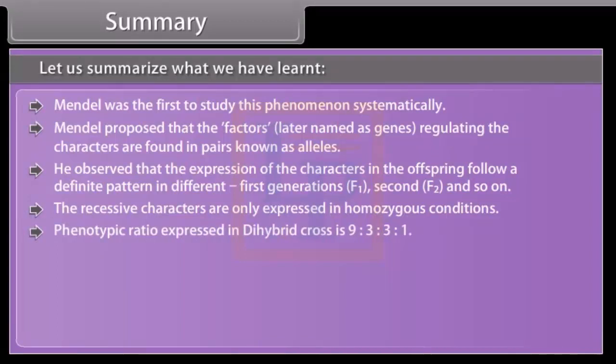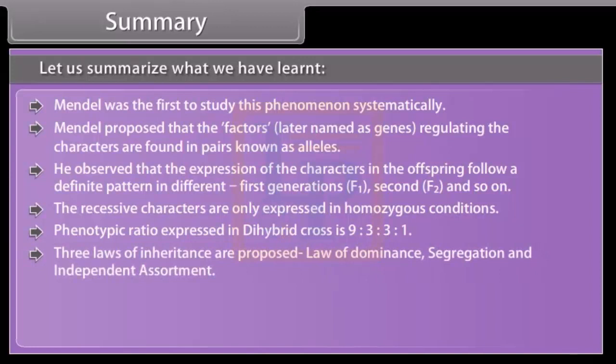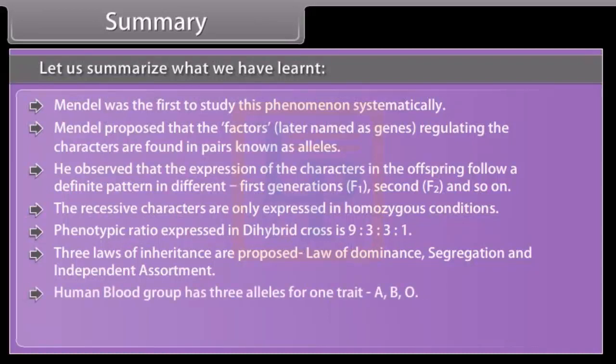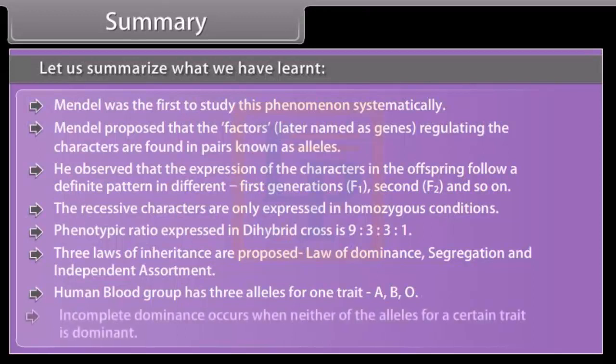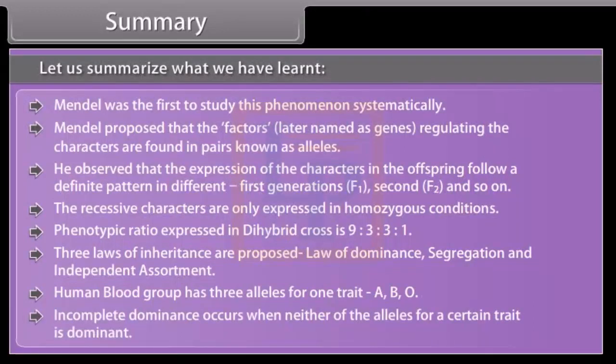Phenotypic ratio expressed in dihybrid cross is 9:3:3:1. Three laws of inheritance are proposed: law of dominance, segregation, and independent assortment. Human blood group has three alleles for one trait: A, B, O. Incomplete dominance occurs when neither of the alleles for a certain trait is dominant.